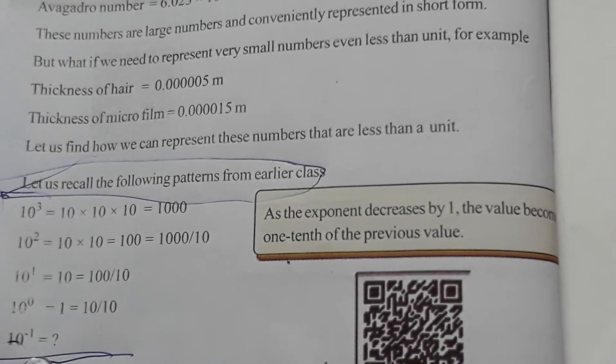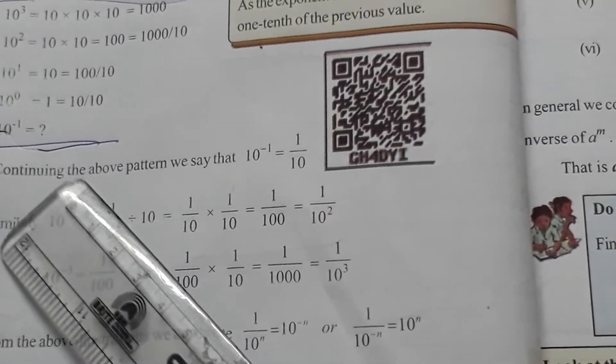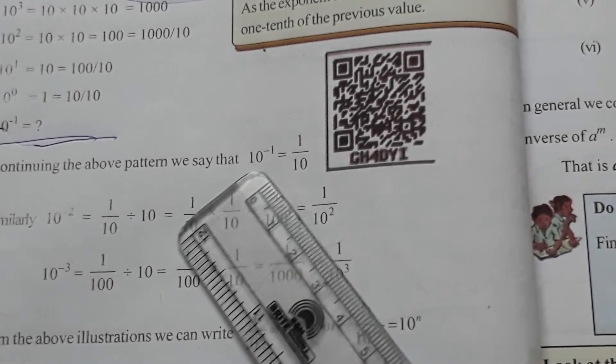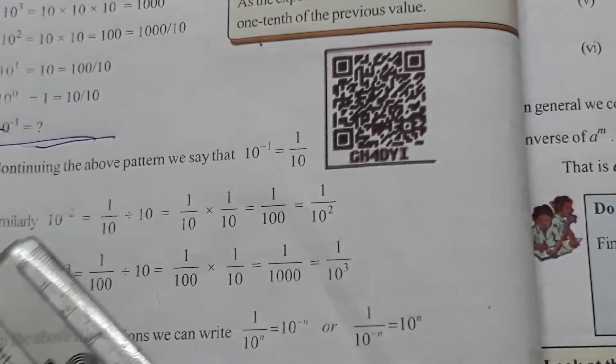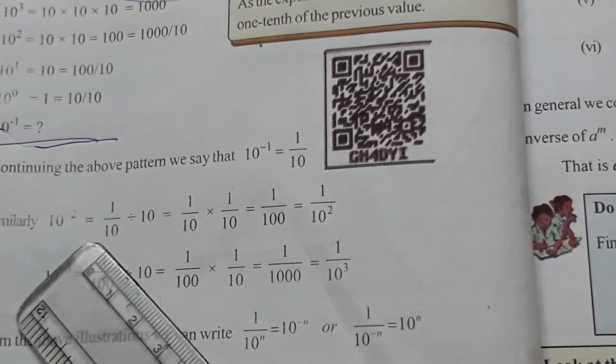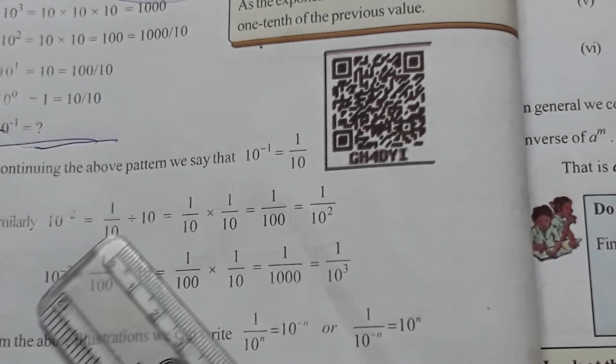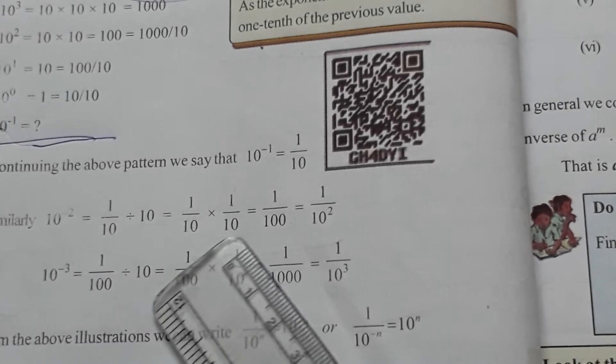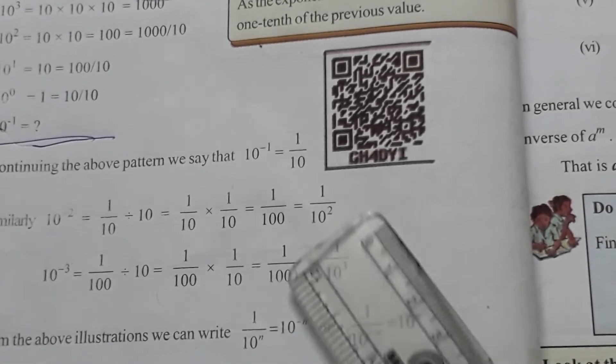10⁻¹. Continuing the above pattern, we say that 10⁻¹ is equal to 1/10. Similarly, 10⁻² is equal to 1/10/10, that is equal to 1/10 × 1/10, is equal to 1/100, is equal to 1/10².